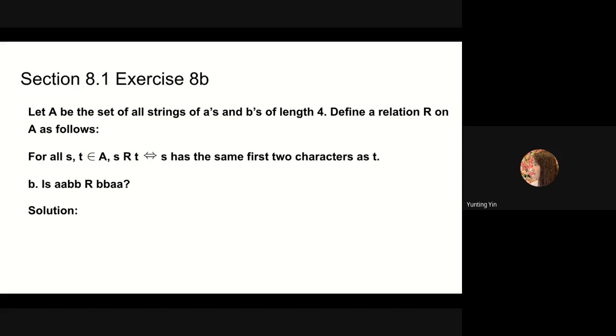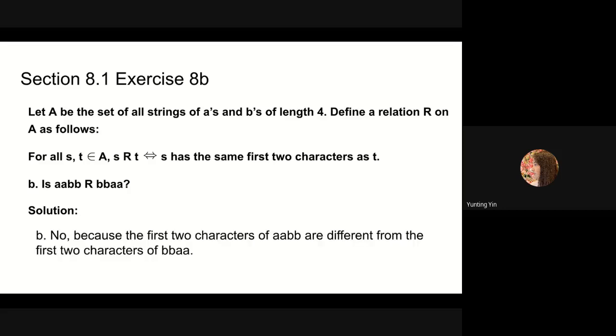For part b, we need to determine if the string aabb is in relation r with the string bbaa. This is false because their first two characters differ.